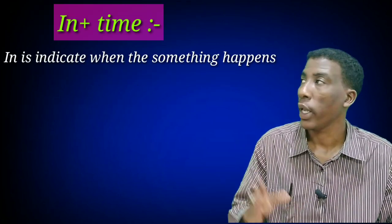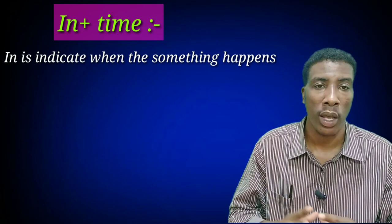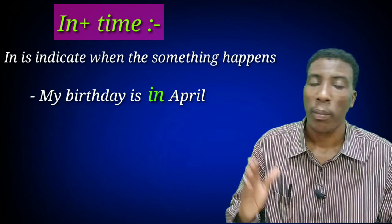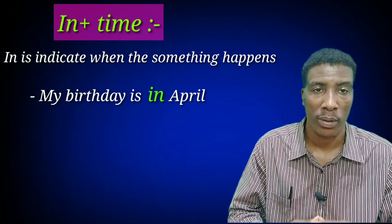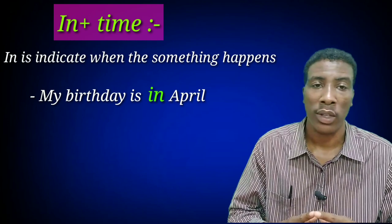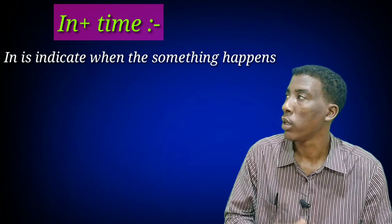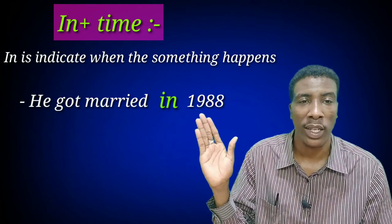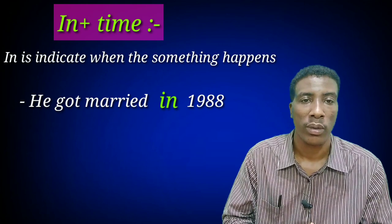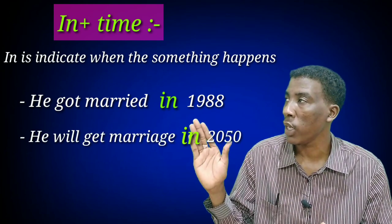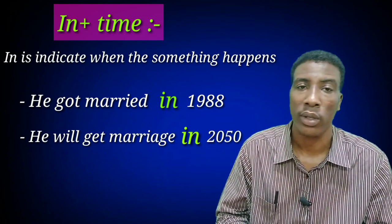Now, 'in' with time. 'In' indicates when something happened. For example: 'My birthday is in April.' April indicates the time. 'In' is also used for longer periods of time — for example: 'He got married in 1988' or 'He will get married in 2050.' Both 1988 and 2050 are longer periods.